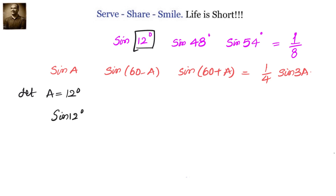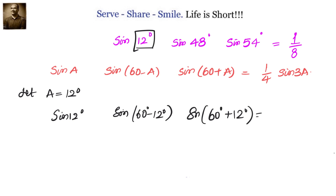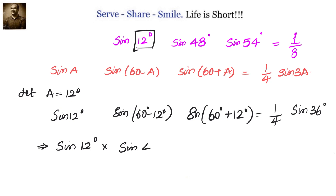We see that part of this formula is available here. So we have sin 12 degrees into sin(60 minus 12) degrees into sin(60 plus 12) degrees equals 1/4 sin 3A, that is 1/4 into sin 36 degrees. We can simplify: sin 12 degrees multiplied with sin 48 degrees multiplied with sin 72 degrees equals 1/4 into sin 36 degrees.